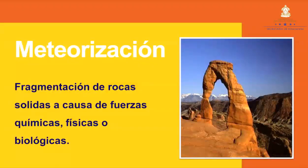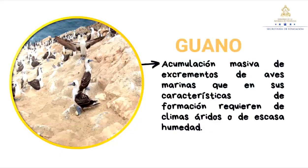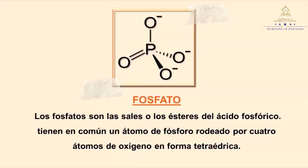Meteorización: fragmentación de roca sólida a causa de fuerzas químicas, físicas o biológicas. Guano: acumulación masiva de excrementos de aves marinas que en sus características de formación requieren de clima árido o de escasa humedad. Fosfato: los fosfatos son las sales o los ésteres del ácido fosfórico. Tienen en común un átomo de fósforo rodeado por cuatro átomos de oxígeno en forma tetraédrica.